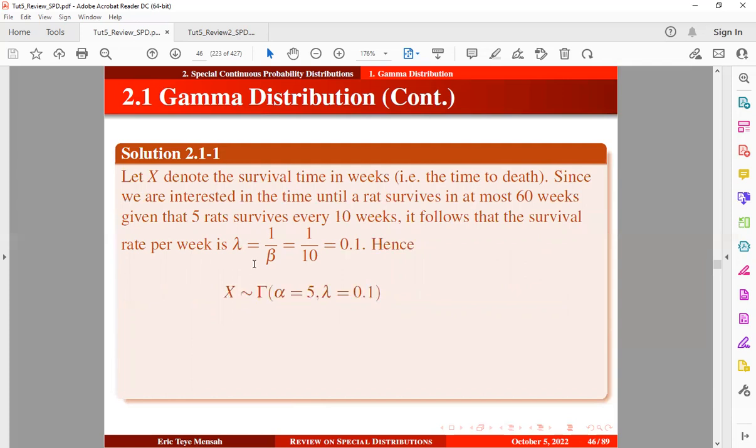So hence, we have our random variable X to follow the gamma distribution with alpha equal to 5 and the rate equal to 0.1. So we can have our density function for the gamma in this form, which can also be defined in this form. Which we can also re-express it in this form.